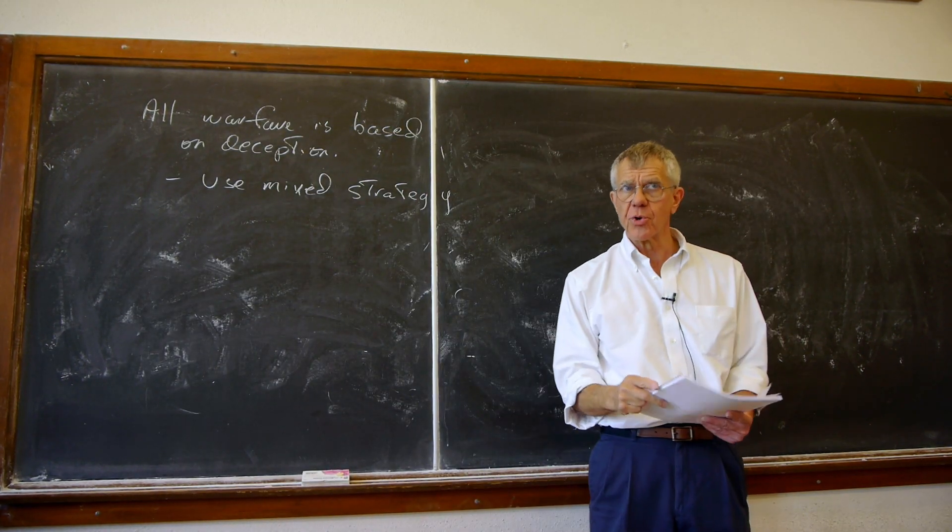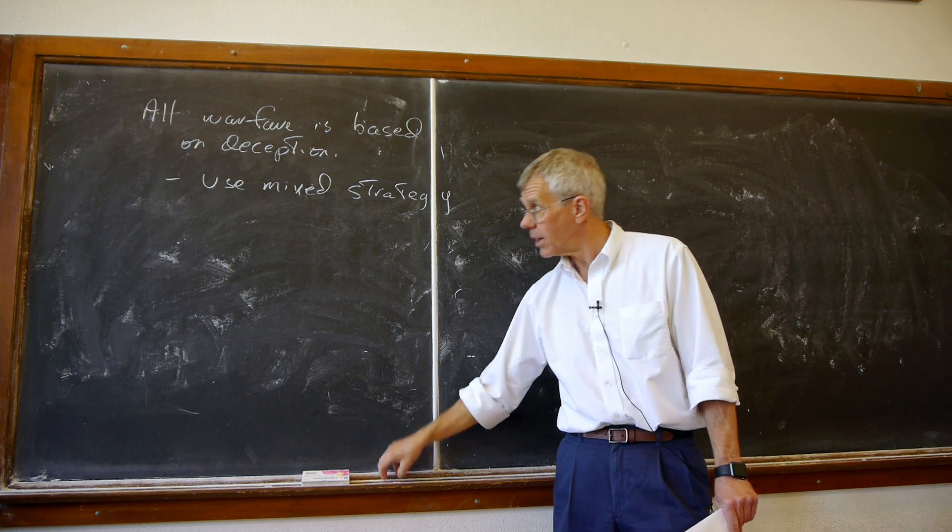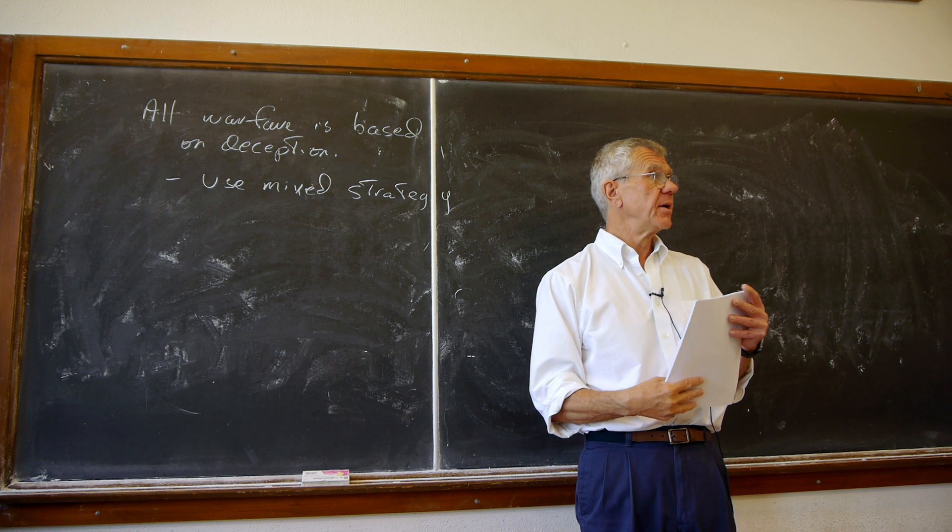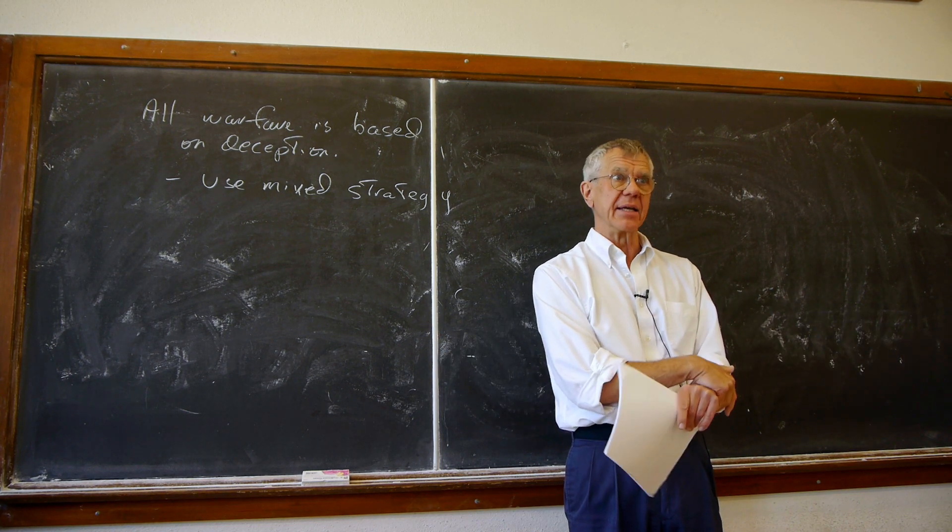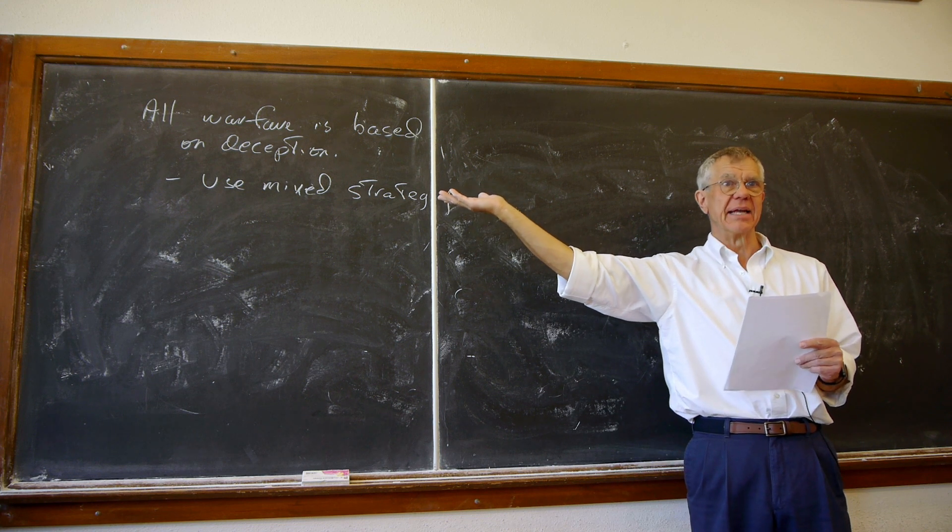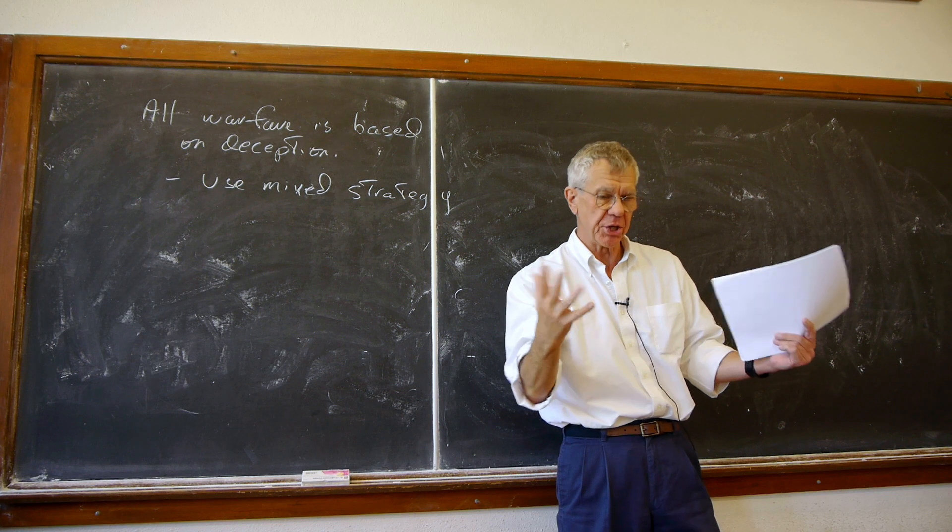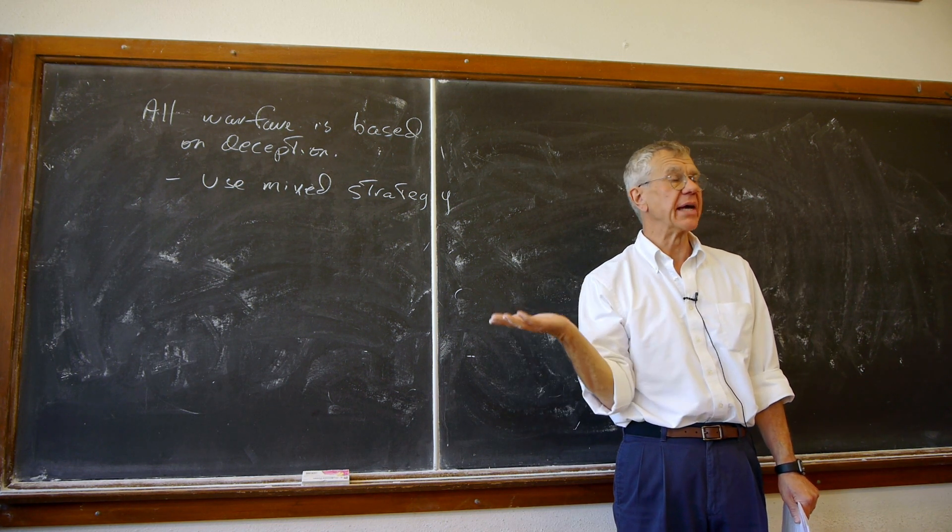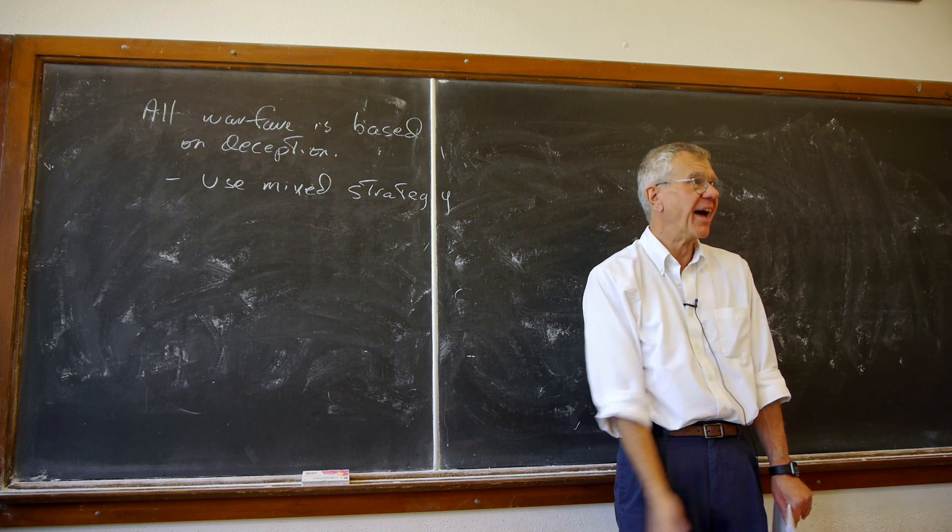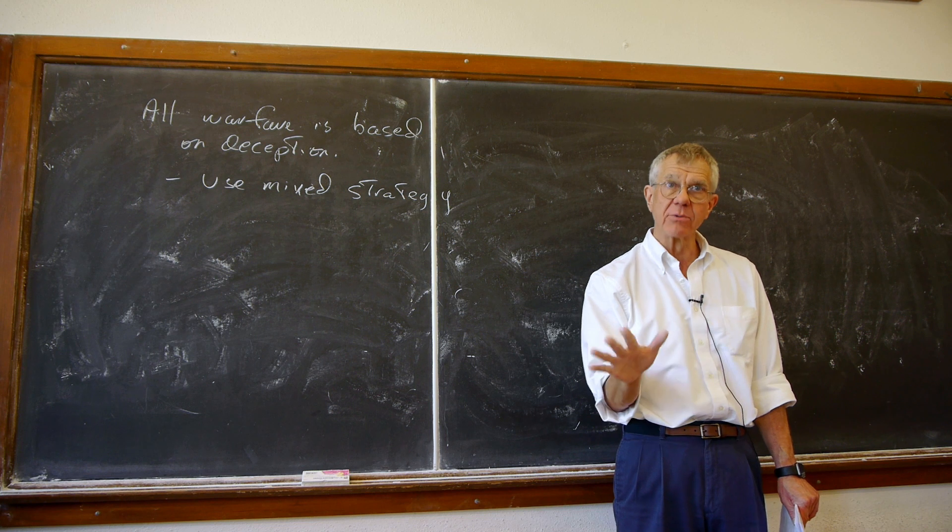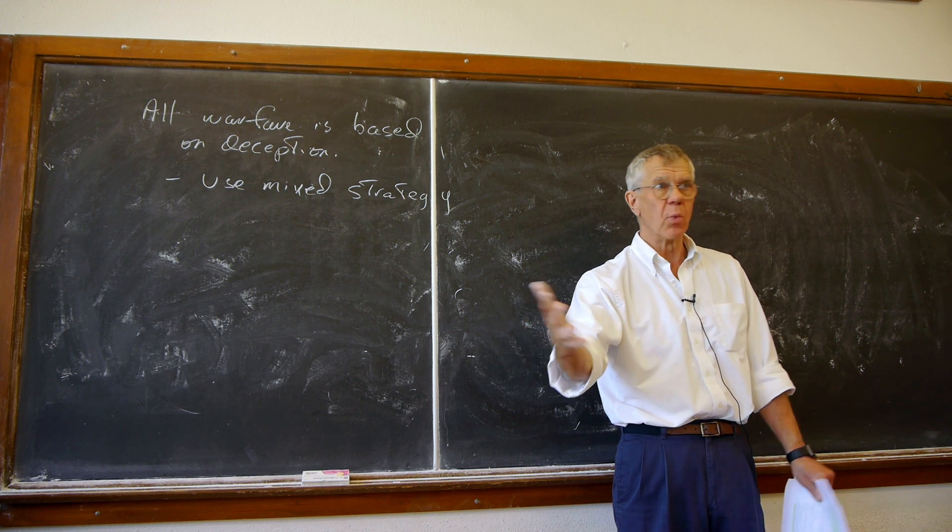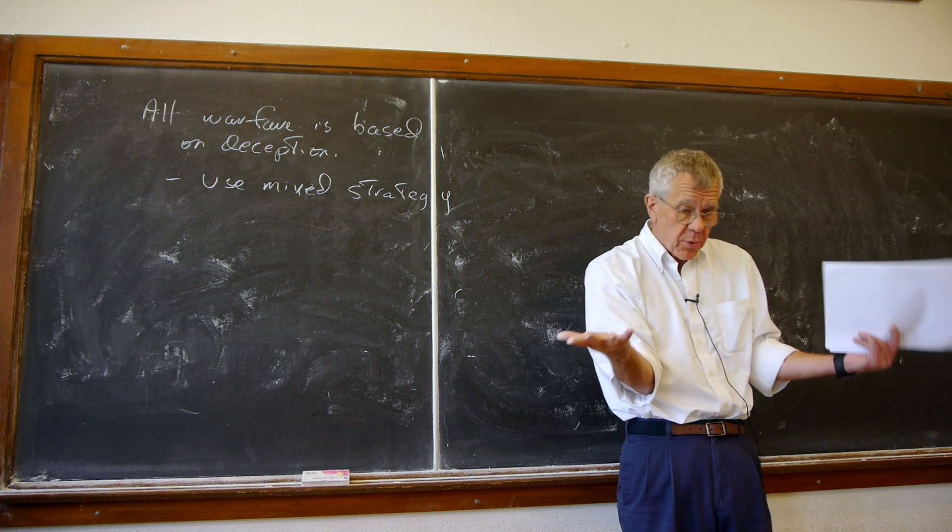Often there are pure strategy equilibria as well as mixed strategy equilibria. For example, in the game about driving, we can drive on the right or left. There is another solution that says let's flip a coin, drive on the right half the time, left half the time. That would be very bad. In coordination or cooperation games, we'd rather have a pure strategy Nash equilibrium because we want the other person to be able to cooperate with us.